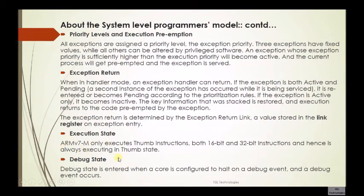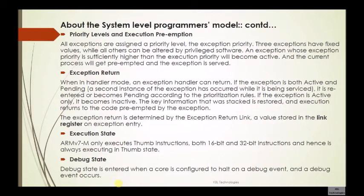ARMv7M only executes Thumb instructions — both 16-bit and 32-bit — so it is always executing in the Thumb state. This is a high-performance design choice; if there were two states like Thumb1 and Thumb2 there would be wasted clock cycles during state switching. Debug state is entered when the core is configured to halt on a debug event and such an event occurs — for example when a debugger is connected to the core.